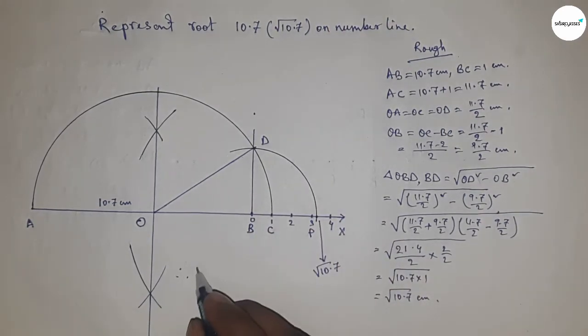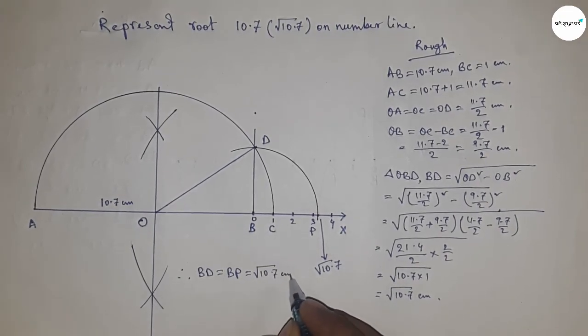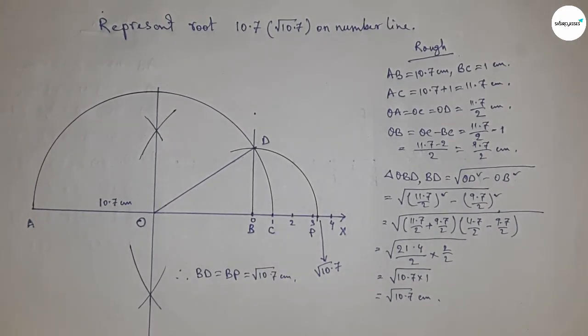Therefore, distance BD and BE are equal, so equal to root 10.7 centimeter. That's all, thanks for watching. Please subscribe, like and comment on my video.